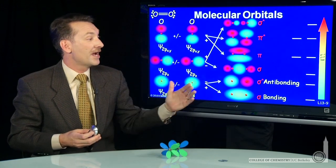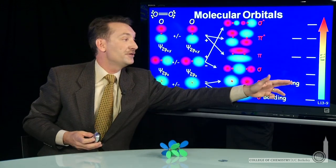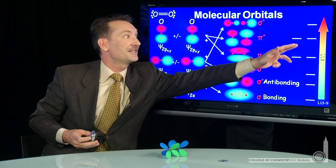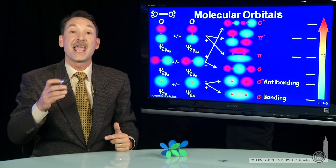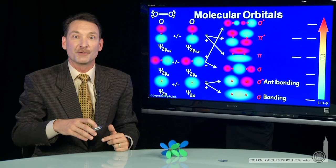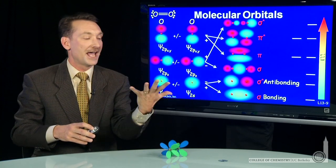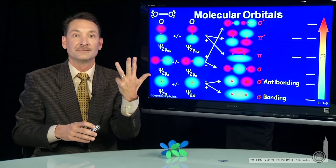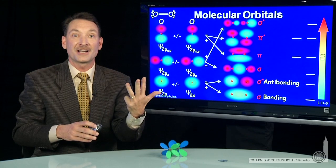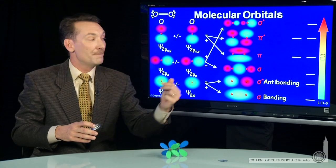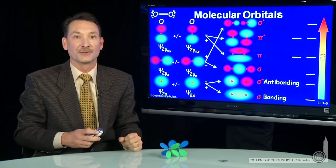So here I have 1, 2, 3, 4, 5, 6, 7, 8 orbitals from the eight atomic orbitals that I started with. Each oxygen had an s and three p's. So four orbitals on each oxygen, eight total, make eight molecular orbitals.